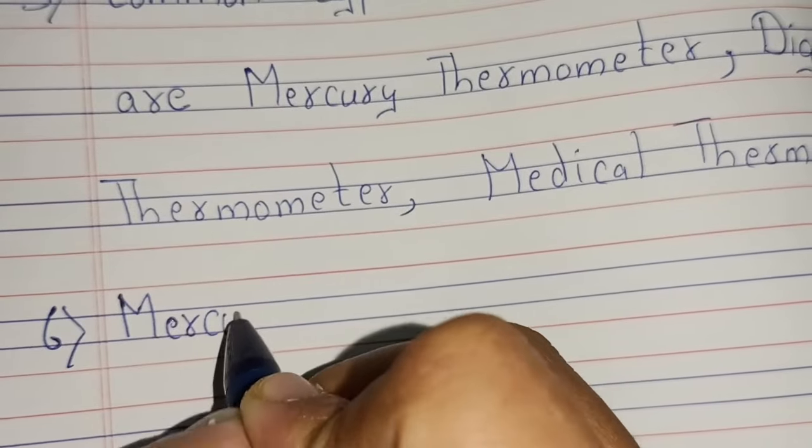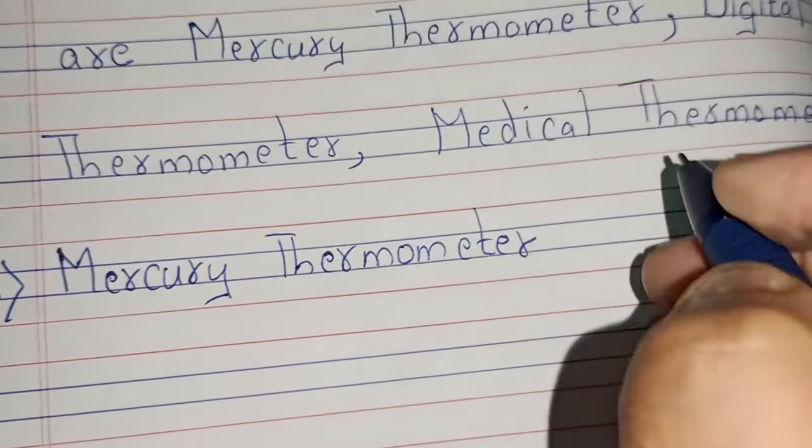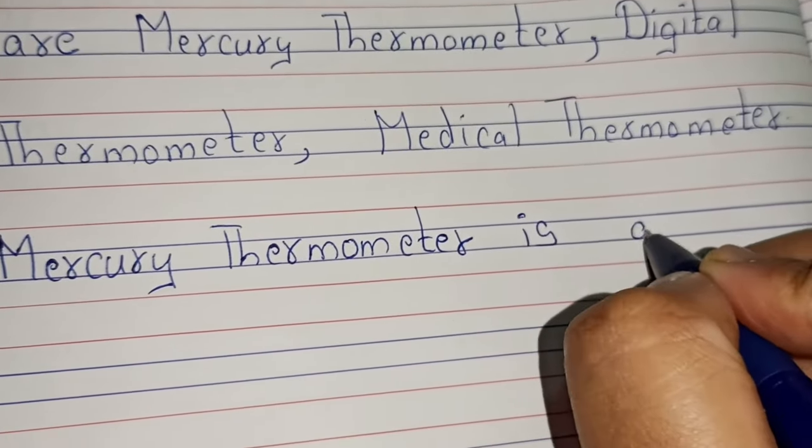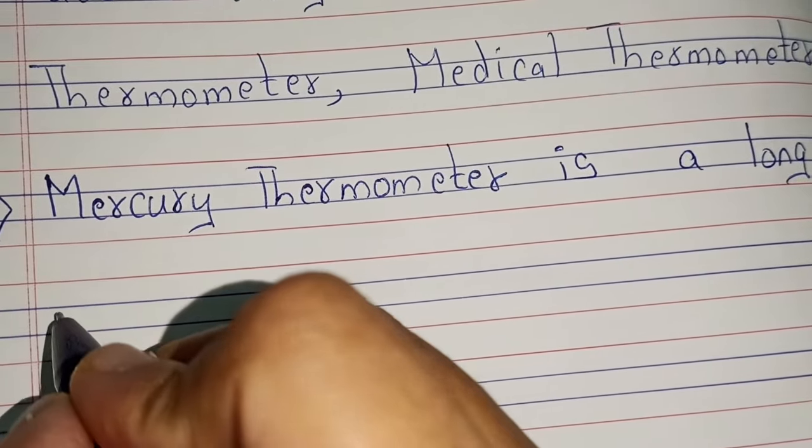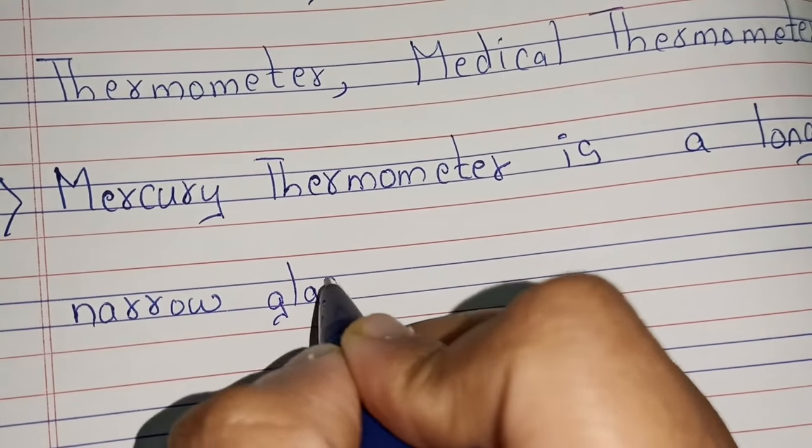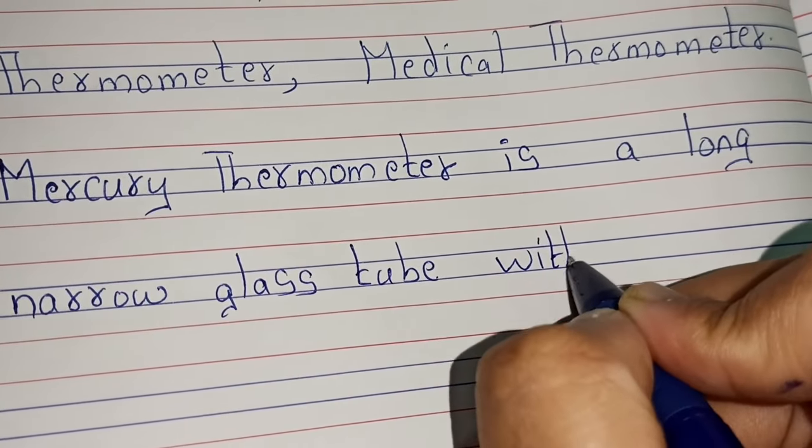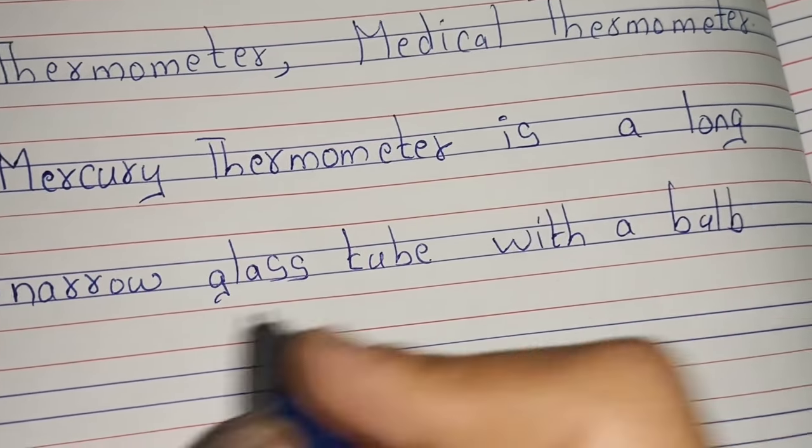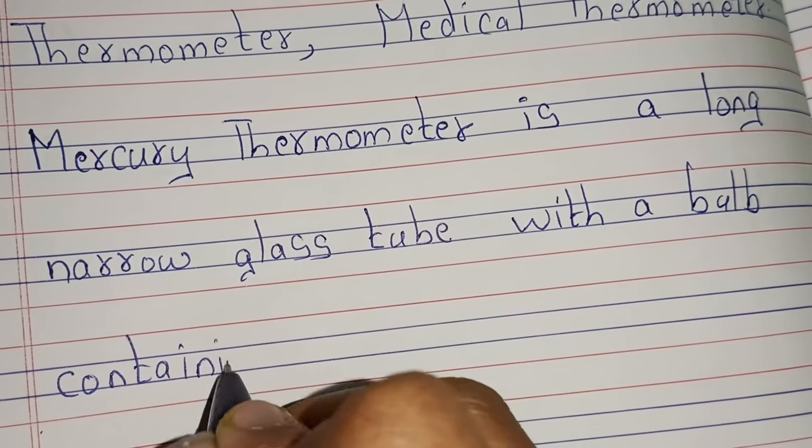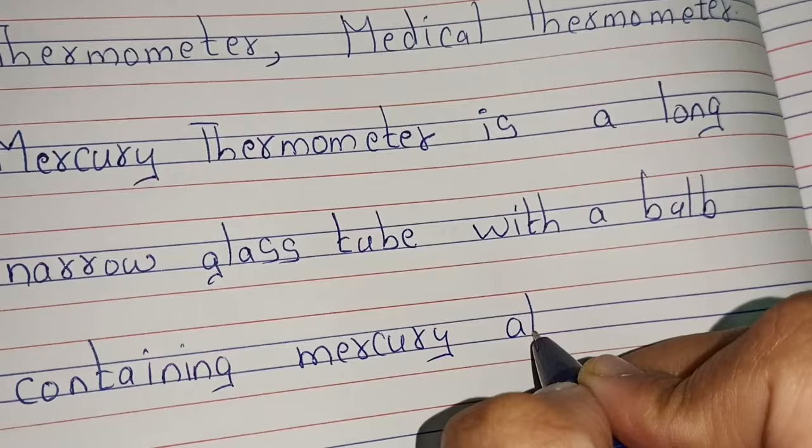Mercury thermometer is a long narrow glass tube with a bulb containing mercury at the end.